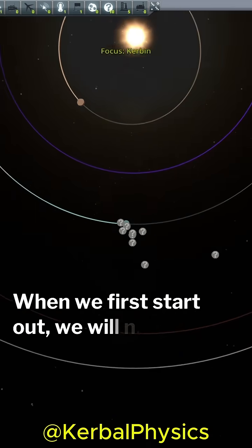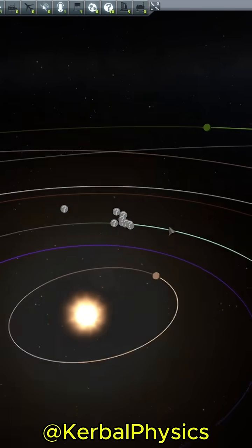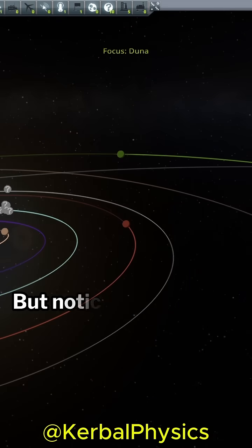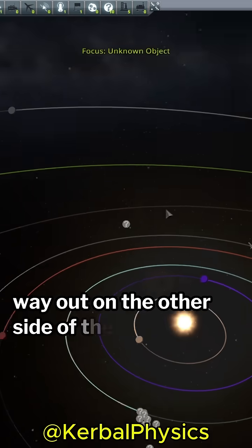When we first start out, we will notice that there are several unknown objects near Kerbin in its orbit. All of these are asteroids, but notice that there is one significant outlier, way out on the other side of the solar system.